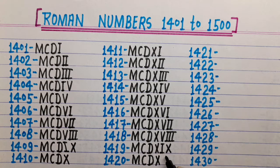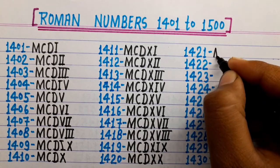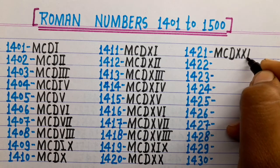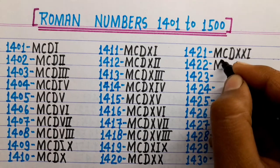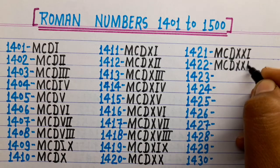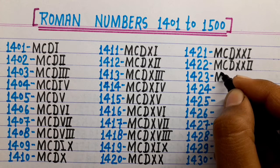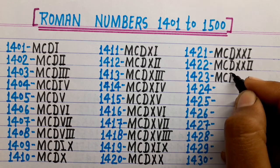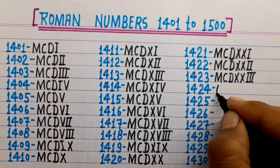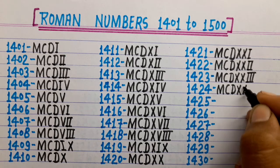1420 is MCDXX. 1421 is MCDXXI. 1422 is MCDXXII. 1423 is MCDXXIII. 1424 is MCDXXIV.